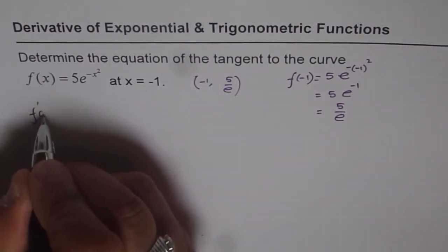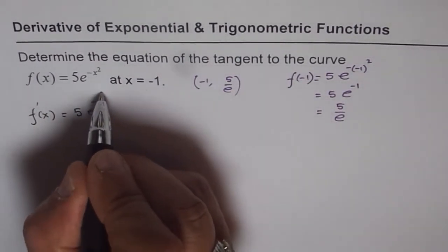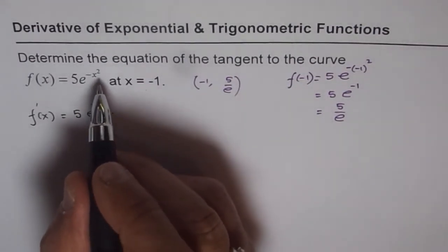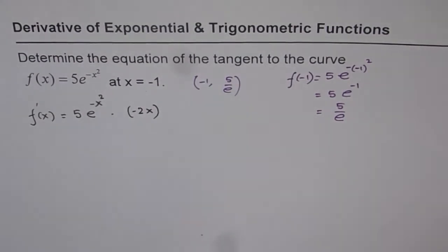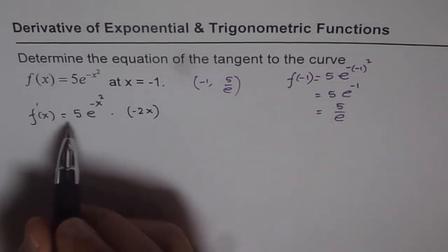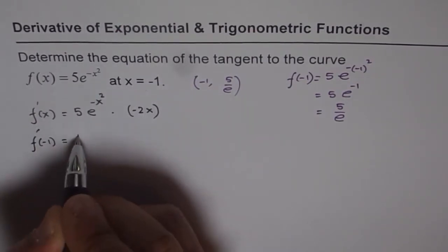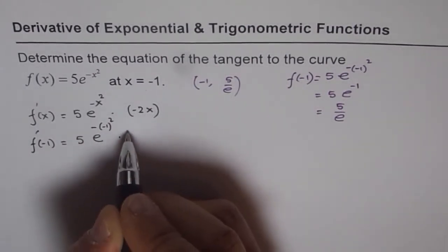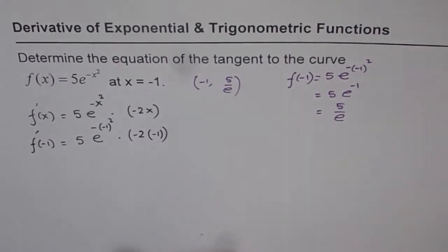So what is f'(x)? f'(x) is 5 times e^(-x²) times the derivative of -x², which is -2x. That is the derivative of -x². Now to find the derivative at -1, we substitute -1: f'(-1) = 5 times e to the power of -(-1)² times (-2)(-1).